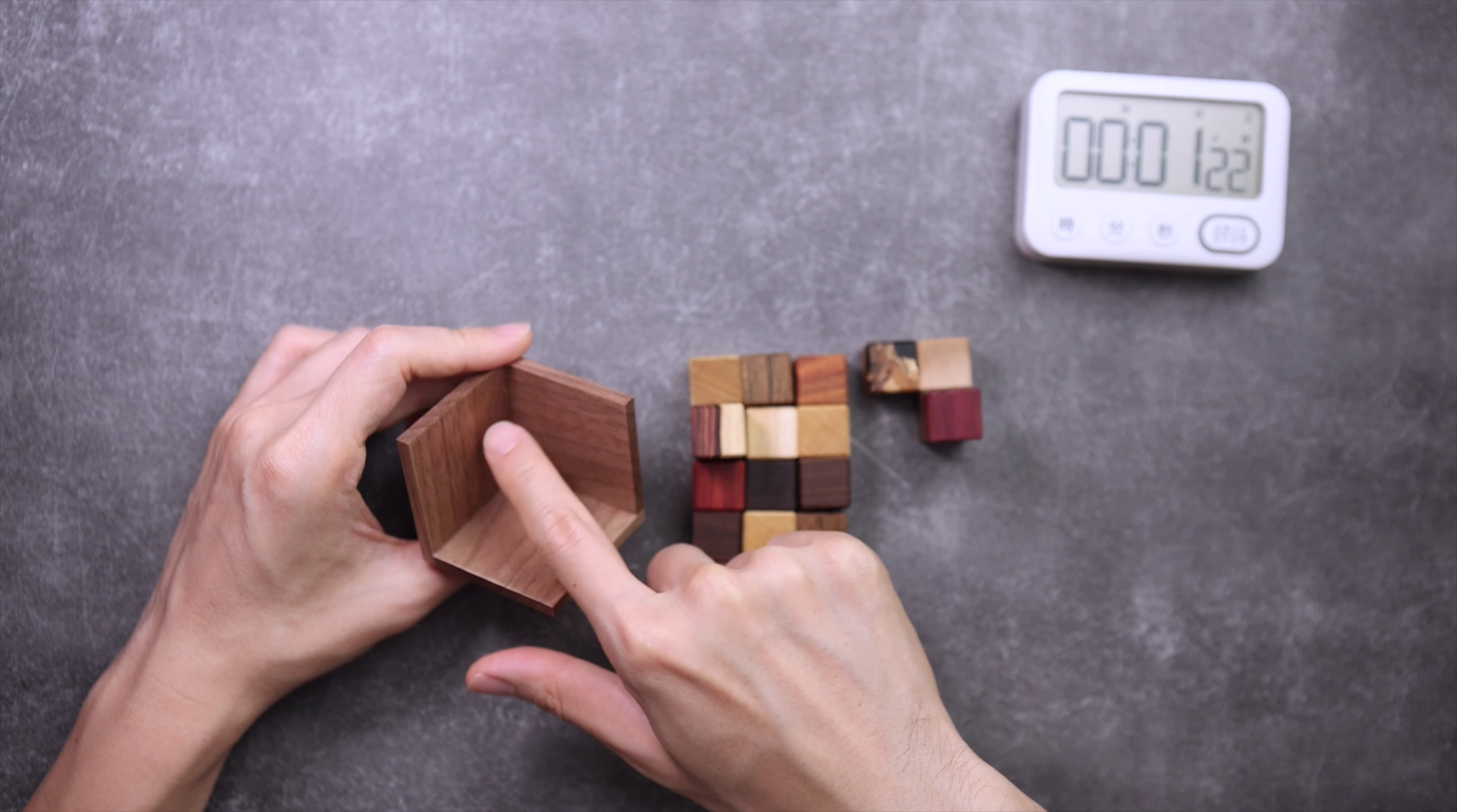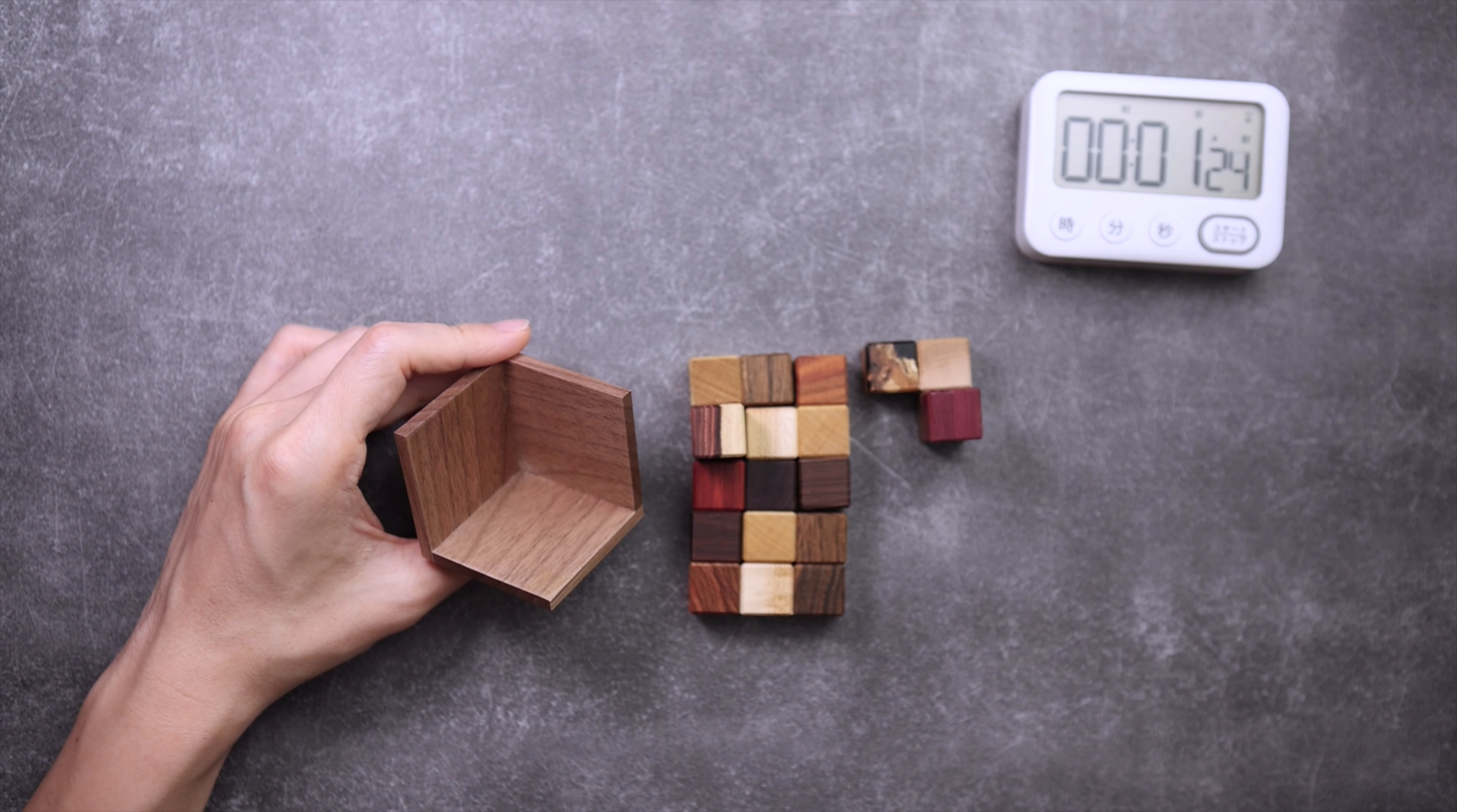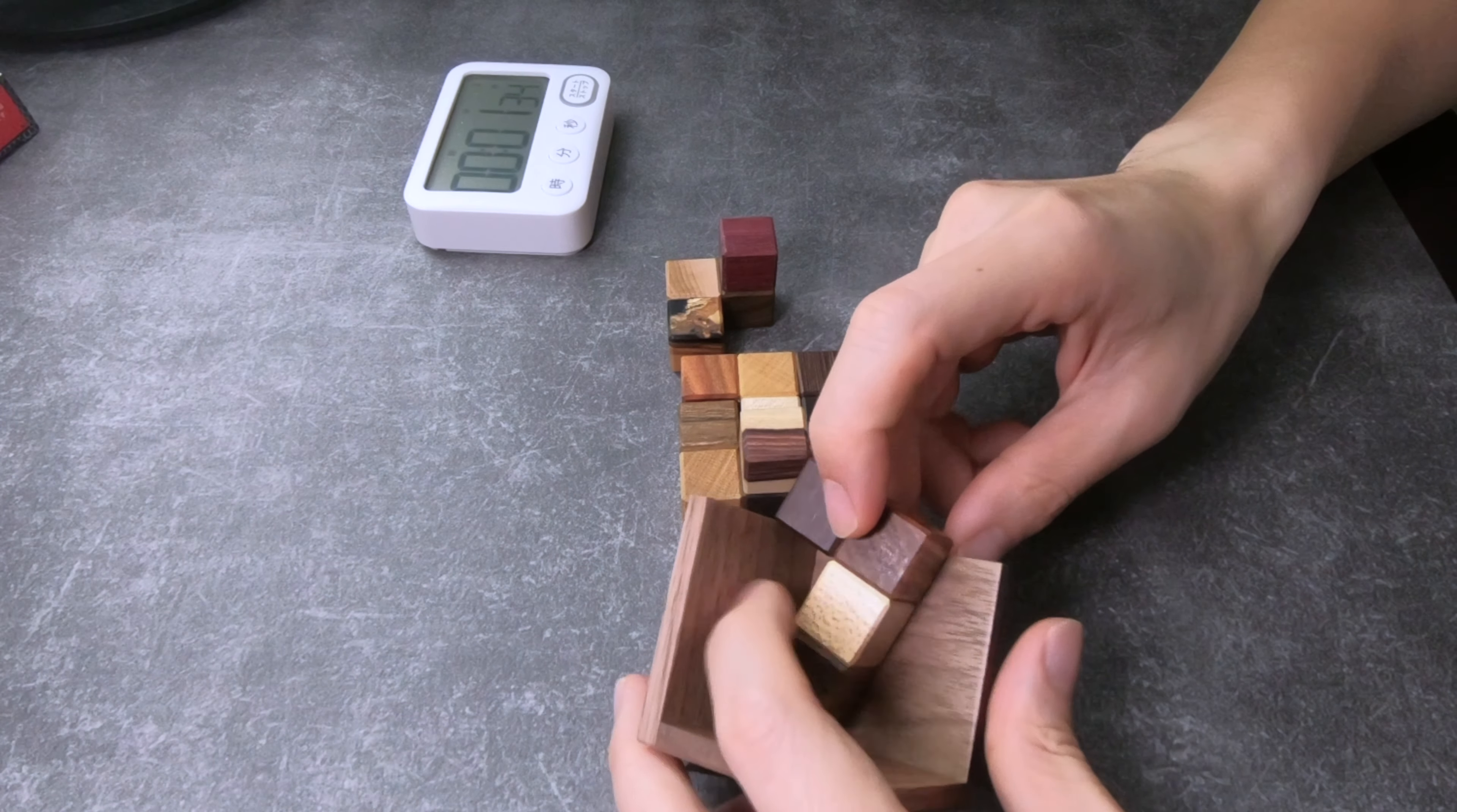This also means that there will be one block left in the inside of the cube, which we cannot see. With that realization, I will start my trial and error approach.